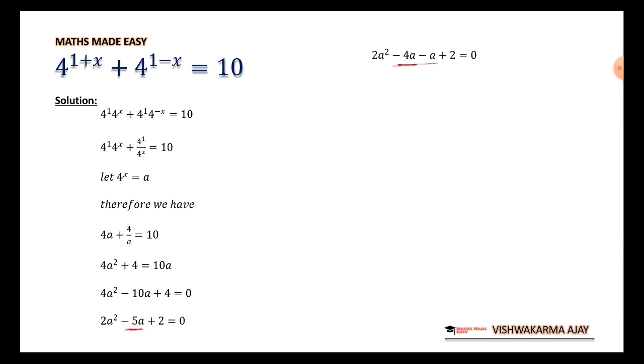So I can write minus 5 in this form. Now, minus 4a minus a, rest is same. Now what I can do is I can take 2a common from here. So 2a(a - 2) - 1(a - 2). Further, (2a - 1)(a - 2) = 0.